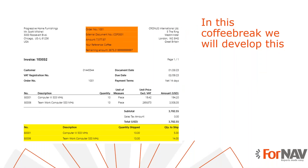Today we're going to get backorder information on your Business Central invoices. To demonstrate this, we will make changes to the sales invoice from the Fornav customizable report pack. We will use the Fornav ability to read data directly from the Business Central database to get backorder information. We will not have to do any programming at all. The techniques we will demonstrate today are valid for any Fornav report in any extension.